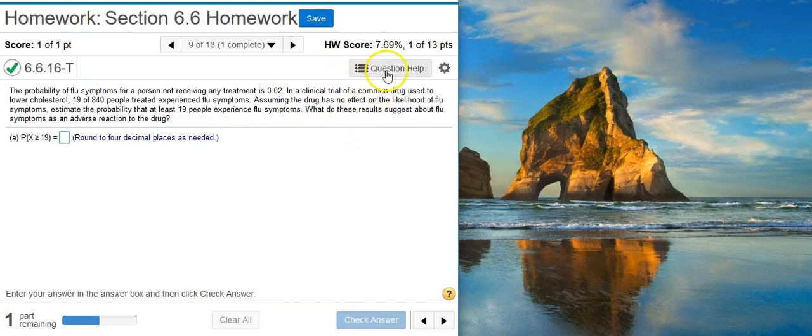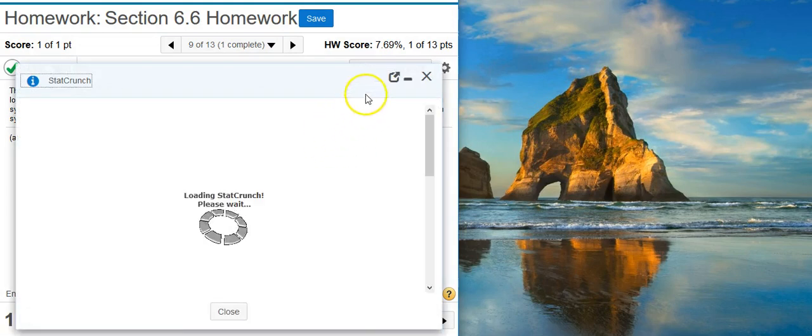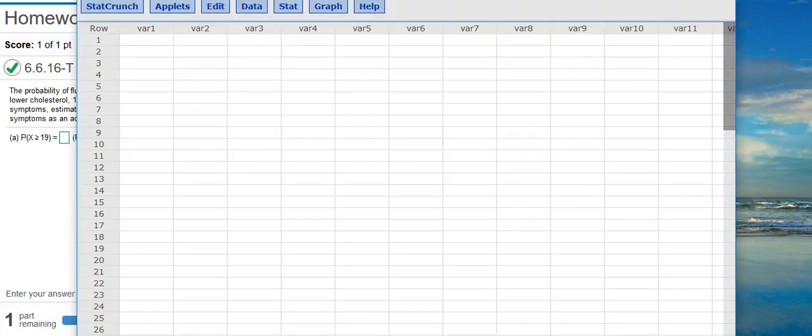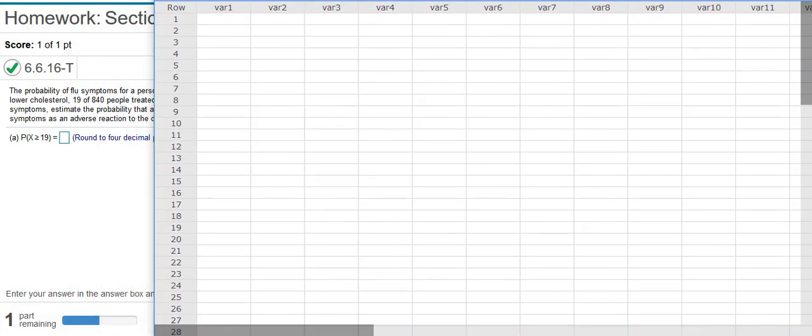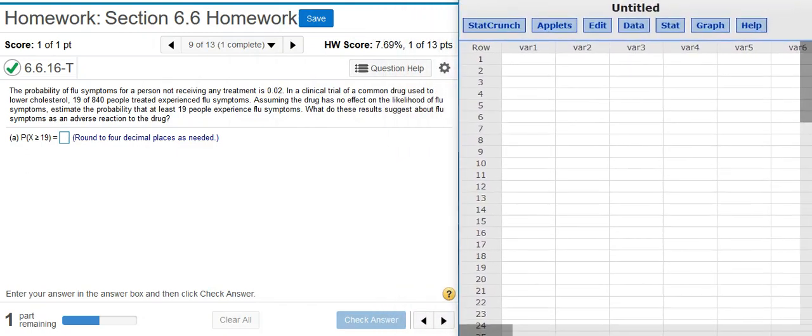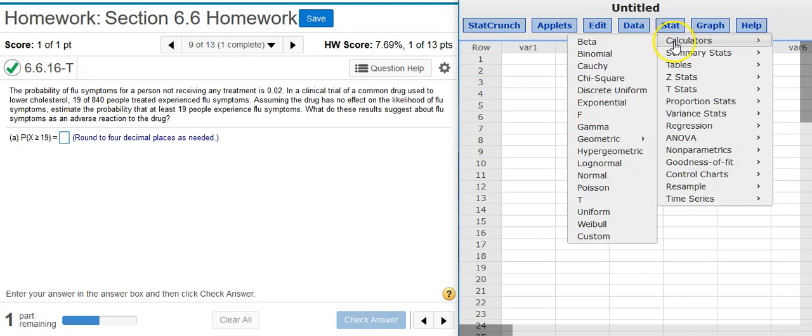To start out with, we're going to have to load up StatCrunch. So let's open that up here and I'll pop this window out. And let's move this around so we can see everything quite a bit better. Here in StatCrunch, we're going to go to Stat, Calculators, Binomial.